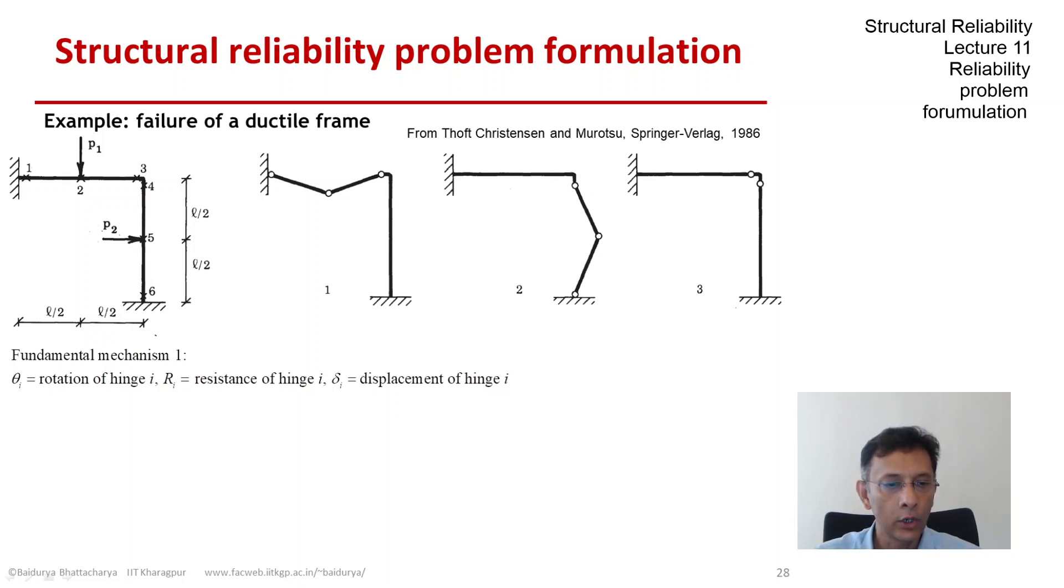By inspection, we can clearly see that theta 1 and theta 3 have to be equal, and we can also impose compatibility and conclude that theta 2 has to be the sum of theta 1 and theta 3, and the displacement under point node 2, delta 2, will be theta 1 L over 2.